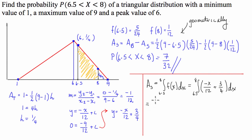So this is going to equal - we're going to evaluate this integral. We're going to take the integral of this, and that's going to be negative x squared divided by 24. I'm assuming you know how these integrals work. And then we have 3x over 4, evaluated between 6.5 and 8.